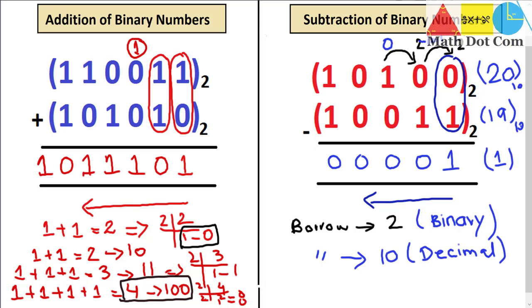That's all from today's lecture. In the next lecture, we will see how to add more than two binary numbers where the result can be 3 bits. Today we dealt with 2-bit results — one bit kept in the answer and the other moved to carry. When you get 3 bits, how to handle that situation will be covered in the next lecture.